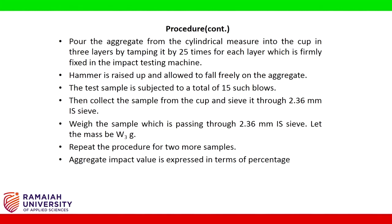The test sample is subjected to a total of 15 such blows. Then collect the sample from the cup and sieve it through 2.36 mm IS sieve. Weigh the sample passing through 2.36 mm IS sieve — let the mass be W3 grams. Repeat the procedure for 2 more samples. Aggregate impact value is expressed as a percentage.